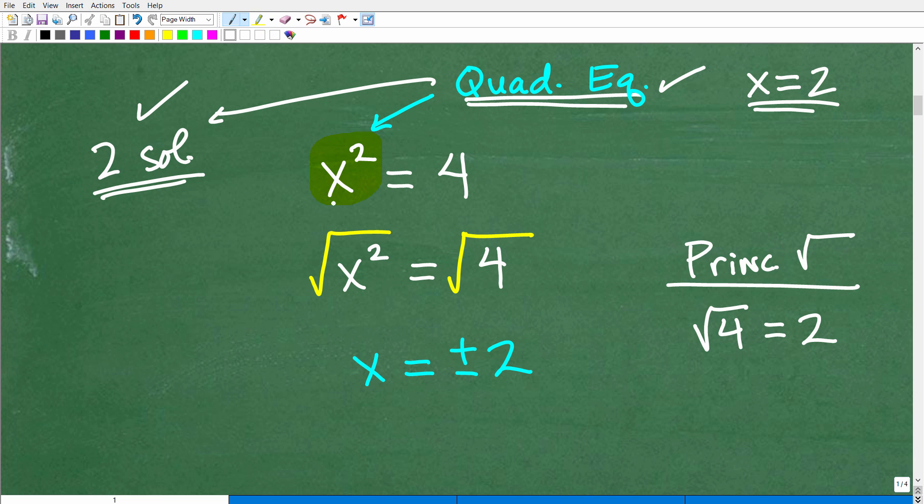The easiest way to solve this particular quadratic equation is simply to take the square root of both sides of the equation. And a lot of you are probably saying, yeah, that's what I did. Well, that's good. So the square root of x squared is x, and now this is where the trouble starts. We have to figure out what the square root of four is.